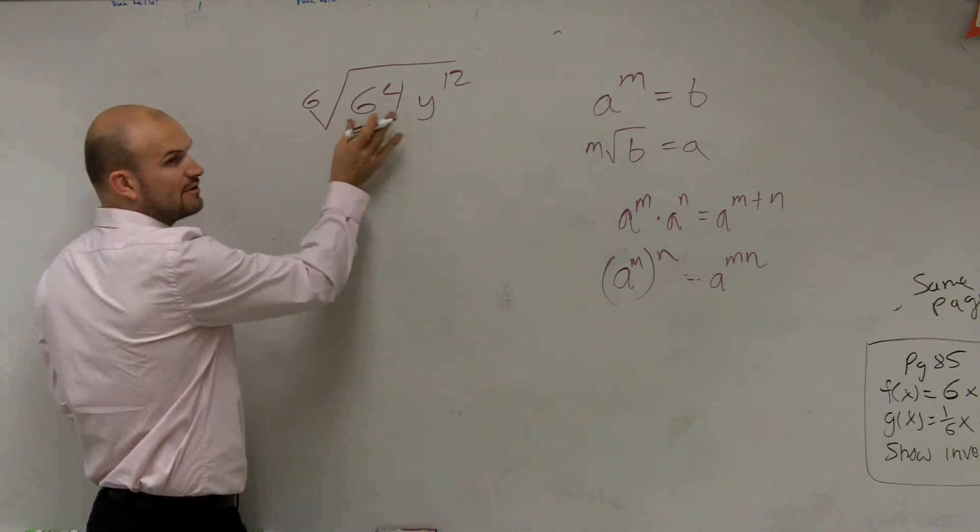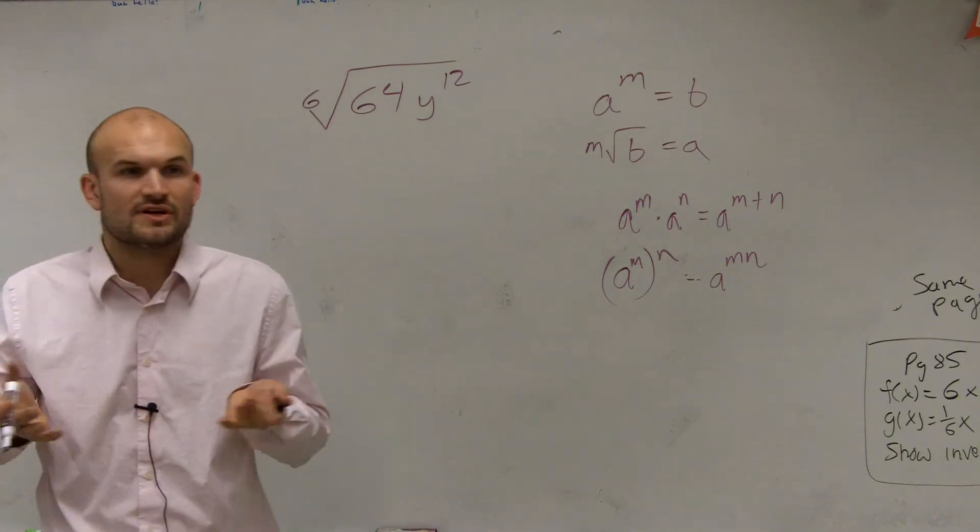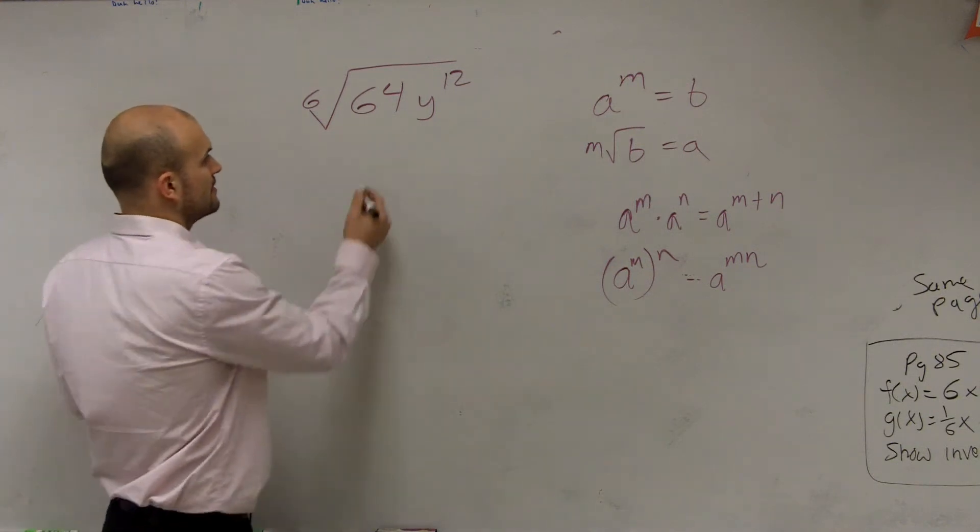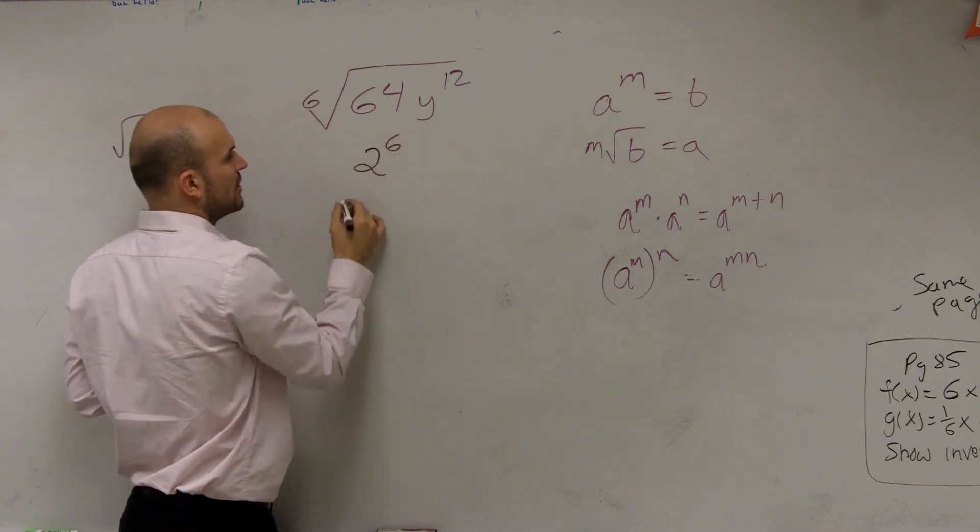So we can look at this and say, can we write 64 as a number raised to the 6th power equals 64? And we could say it's going to be 2 raised to the 6th power, right?